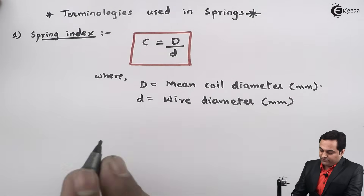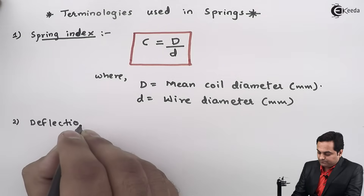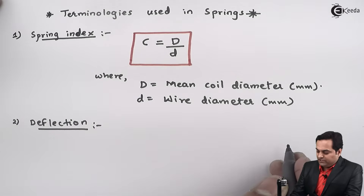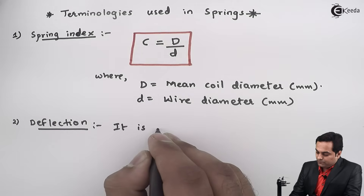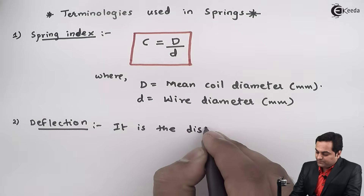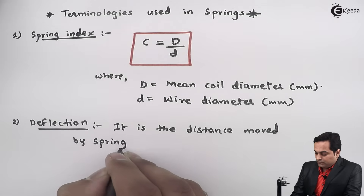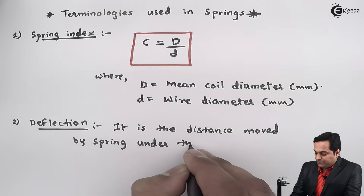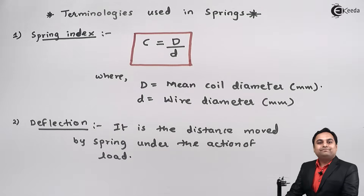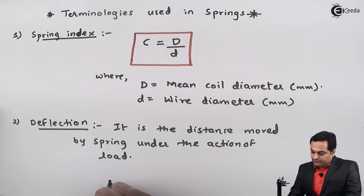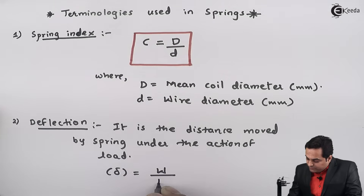The next term is deflection. Deflection is the distance moved by a spring under the action of load. Deflection of a spring is denoted by delta, and it is equal to load upon K, which is stiffness.